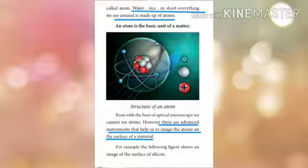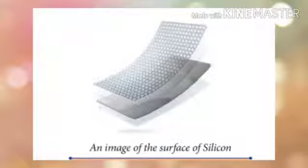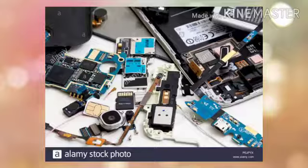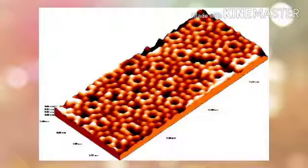Even with the best optical microscope we cannot see atoms. However, there are advanced instruments that help us image atoms on the surface of a material. For example, the following figure shows an image of the surface of silicon — the material you might have seen inside mobile phones and in sound recording devices. It is a very small particle.